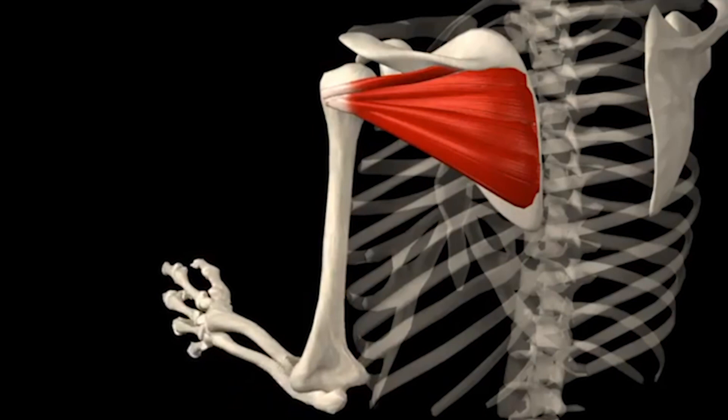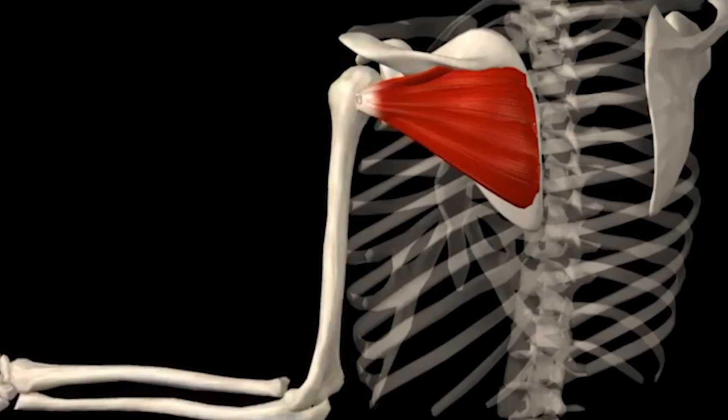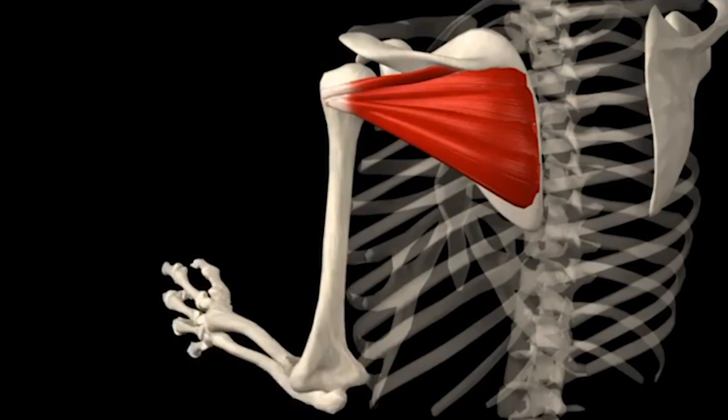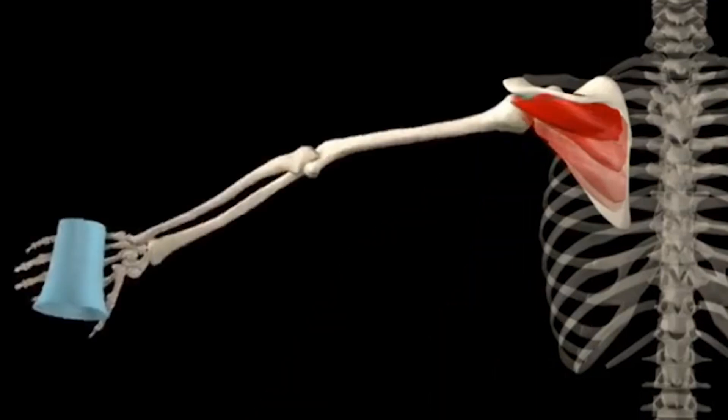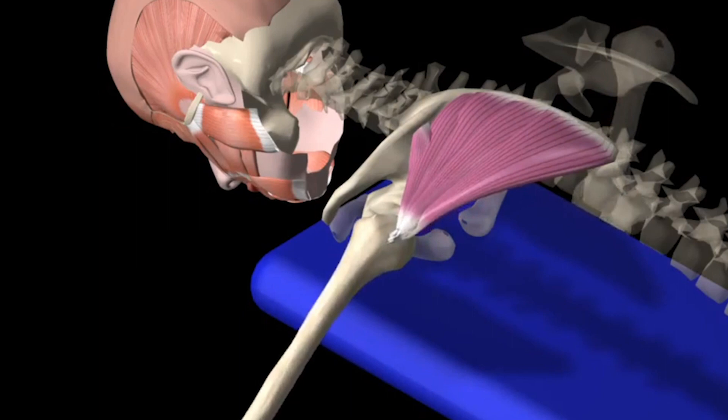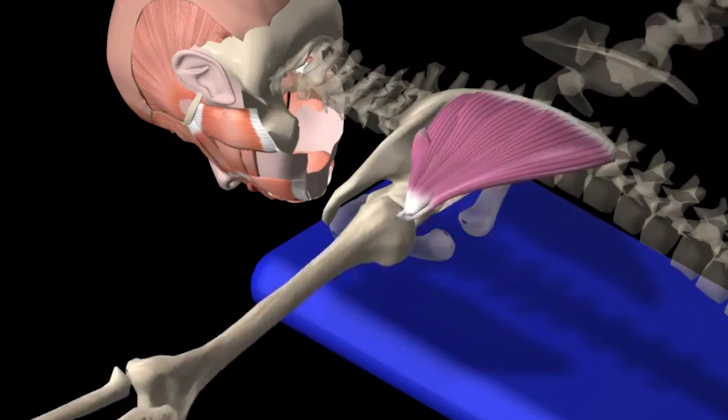The infraspinatus muscle performs external rotation of the shoulder, together with the posterior part of the deltoid muscle and the small round muscle. It's involved in the shoulder abduction with external rotation and the horizontal shoulder abduction. The infraspinatus muscle stabilizes the head of the humerus in the glenoid cavity of the scapula during arm movement and is part of the rotational cuff of the shoulder.